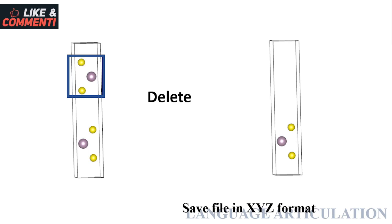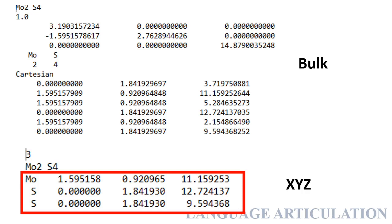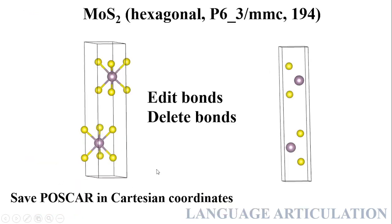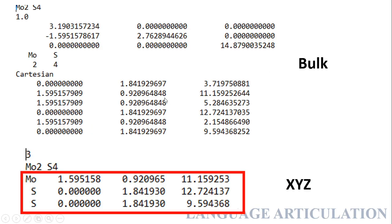Then you have to delete one of the replicas, because VESTA works in a way that it will save replicas. We have to first remove the replicas so that atoms are not counted in double. If you save this file in XYZ format it will save as XYZ, and then you will have two files — one is the bulk file saved from the POSCAR of the first bulk structure.